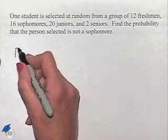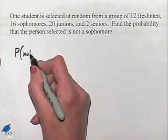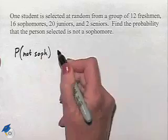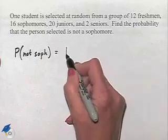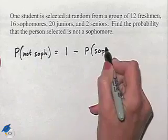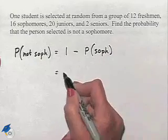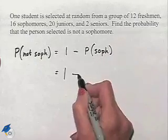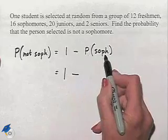So we're going to be looking for the probability that we do not choose a sophomore, and that can be found by taking 1 minus the probability that we do choose a sophomore. So we're going to now proceed by figuring out the probability of choosing a sophomore.